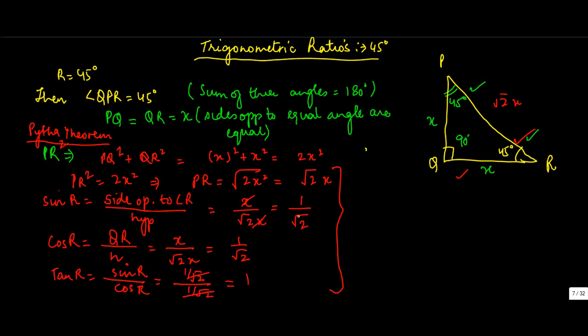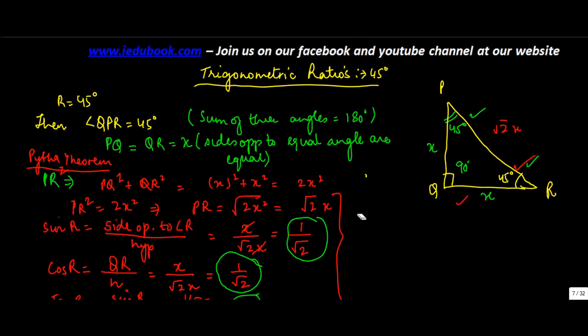Now once you have these three values, namely 1 upon root 2, 1 upon root 2, and 1, you can very easily find out the other values as well. So cosec R is equal to 1 upon sin R, which is 1 upon 1 by root 2, which equals root 2.